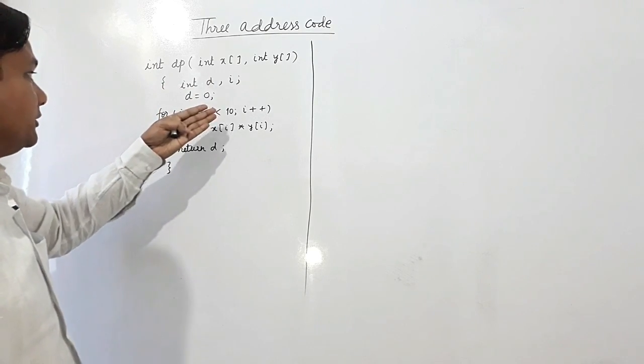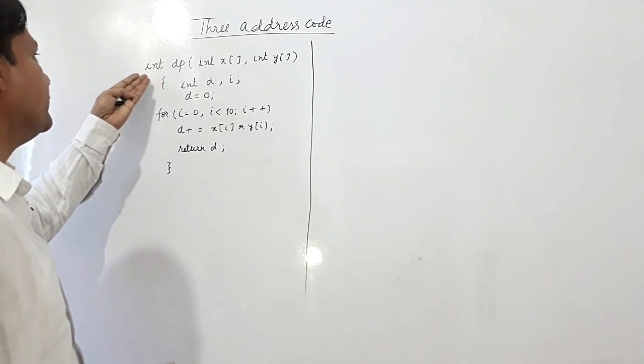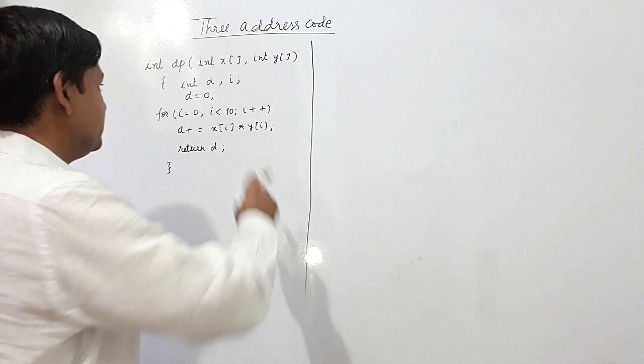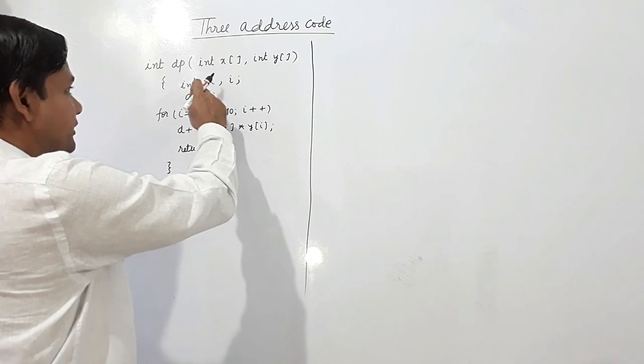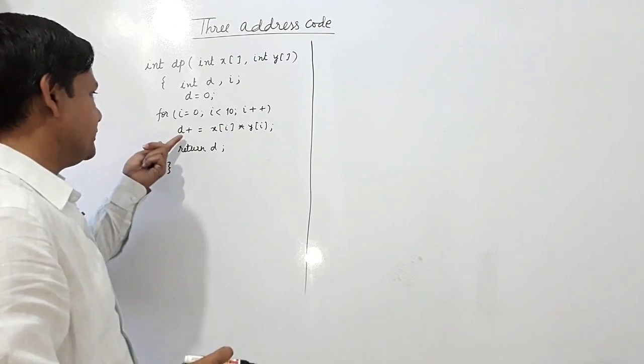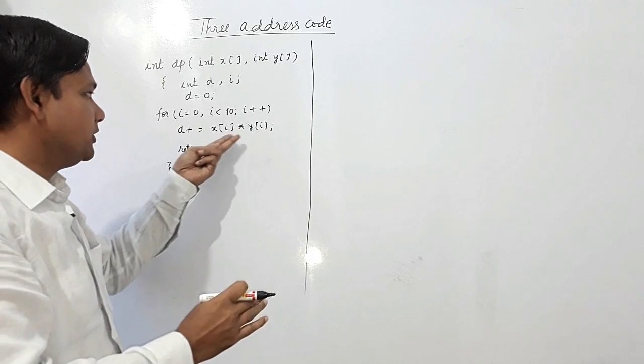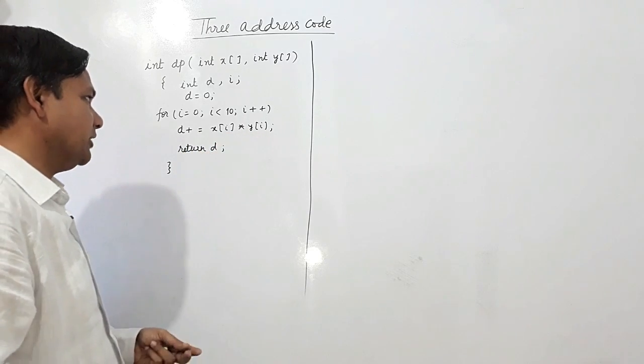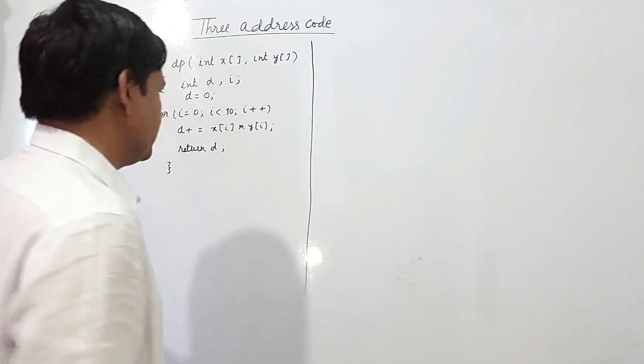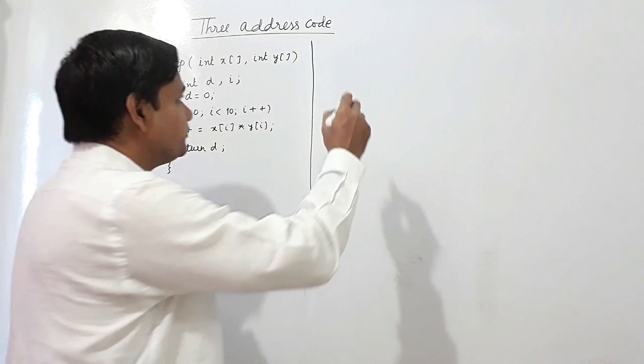We have given this function and we have to write the three address code for this function. Integer dp is a function with return type integer in which these two arrays are being passed of type integer. Here d is an integer taken, value of d is assigned to zero. One loop is there and d is getting some value. x[i] and y[i] are being multiplied and these are added and we are returning d to the calling function. Now we have to write three address code for this function. So first of all, function begin.